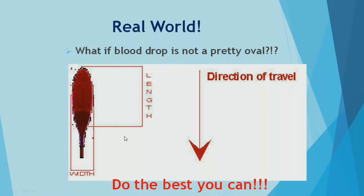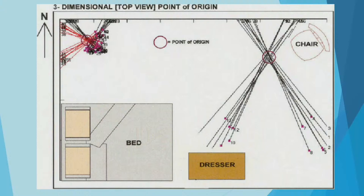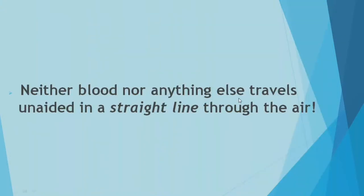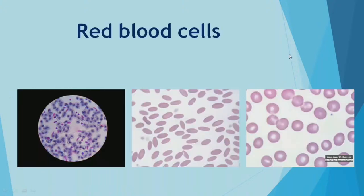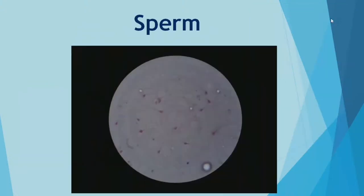Old blood drops leave exclamatory mark patterns that reveal direction. Spatter convergence helps reconstruct the scene. Blood does not travel unaided in a straight line through air. Various examinations confirm whether a stain is blood — human red blood cells are non-nucleated biconcave cells, whereas animal red blood cells are nucleated and oval. Fish, birds, mammals, and amphibians have different red blood cell morphologies.